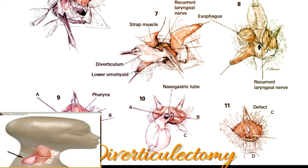An alternative method is to divide the diverticulum with a linear stapler. After thorough irrigation, careful hemostasis is obtained. A small closed suction silastic drain may be placed, and the omohyoid is rejoined with several interrupted sutures. The platysma is re-approximated with fine absorbable sutures, and non-absorbable sutures are used to close the skin in a subcutaneous manner. Adhesive skin strips and a lightweight sterile gauze dressing are applied.